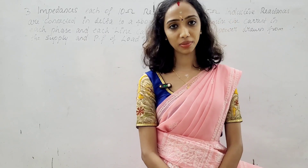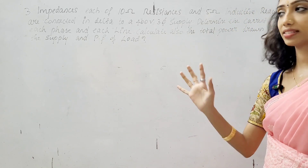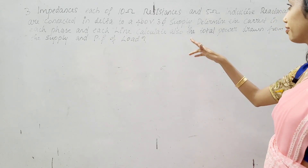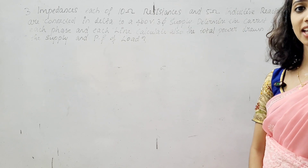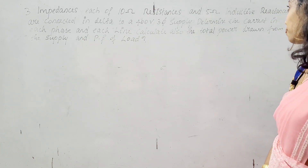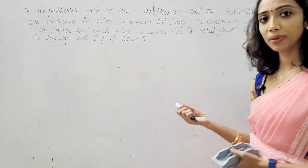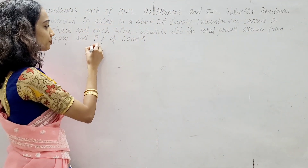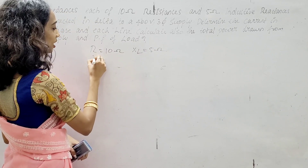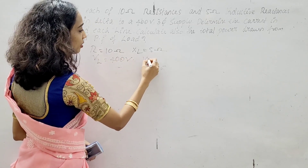In this question, we need line current, phase current, and total power. Three impedances, each of 10 ohm resistance and 5 ohm inductive reactance, are connected in delta to a 400 volt supply. Determine the current in each phase and each line, and calculate the total power drawn from the supply and the power factor of the load. R equals 10 ohm, XL equals 5 ohm, VL equals V-phase equals 400 volts.